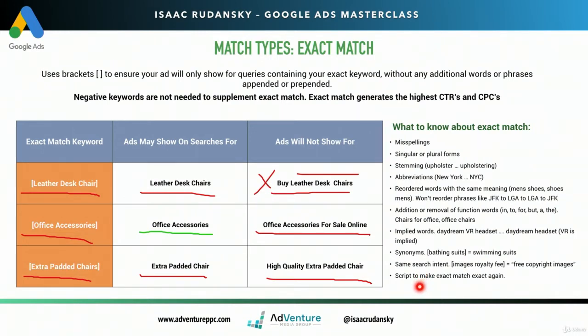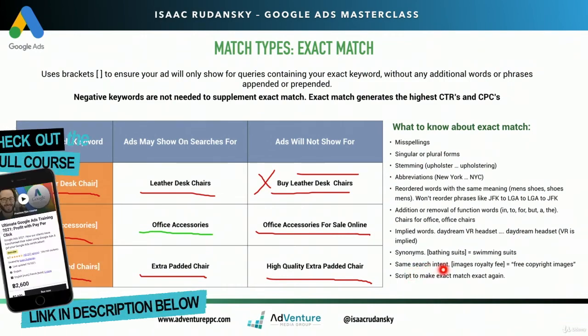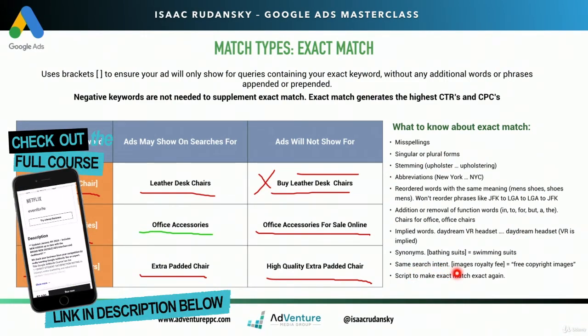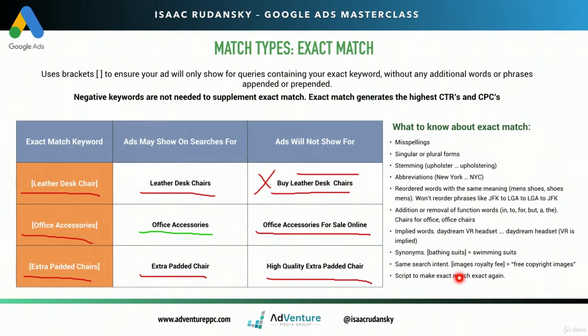Same search intent is really vague and frustrating. This is Google trying to make more money — just let exact match be exact match. It's taking autonomy away from the advertiser. But this is the rule we play by. Google's example: if your exact match keyword is 'images royalty free' and somebody searches for 'free copyright images' — a totally separate phrase — but Google views it as the exact same intent, then Google reserves the right to trigger that exact match keyword.